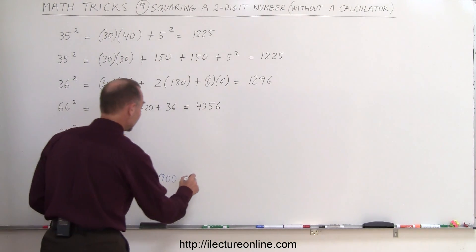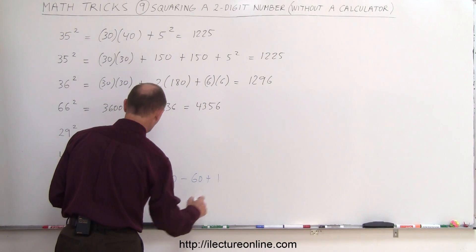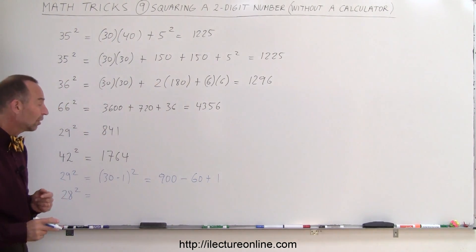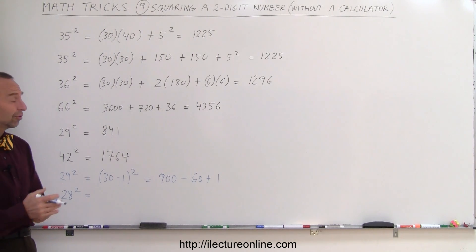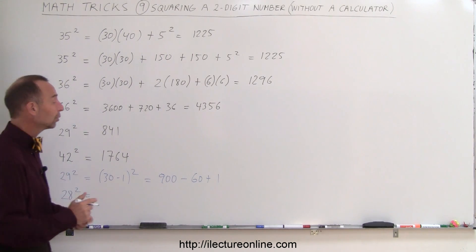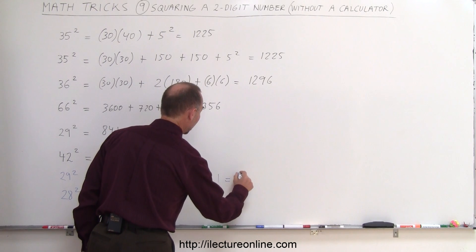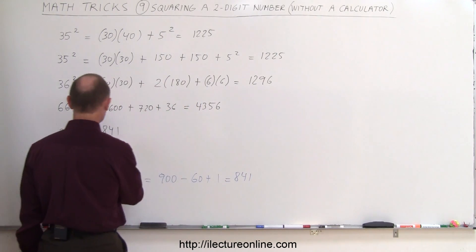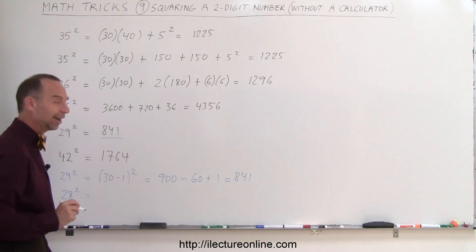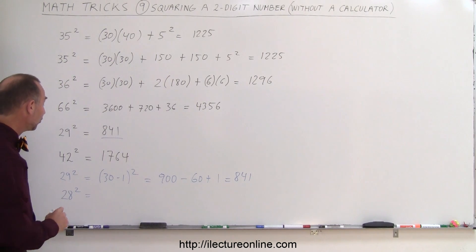And so this would be equal to 900, minus 30 times 1, twice, so with minus 60, plus 1, the last number squared, and so that would be 900 minus 60, which is 840, plus 1, which is 841, and hopefully that's the same number we got when we did it over here, and it is, and so let's try that for 28 squared.